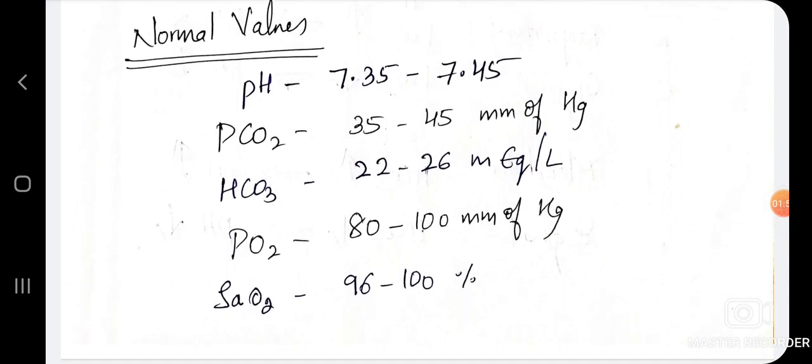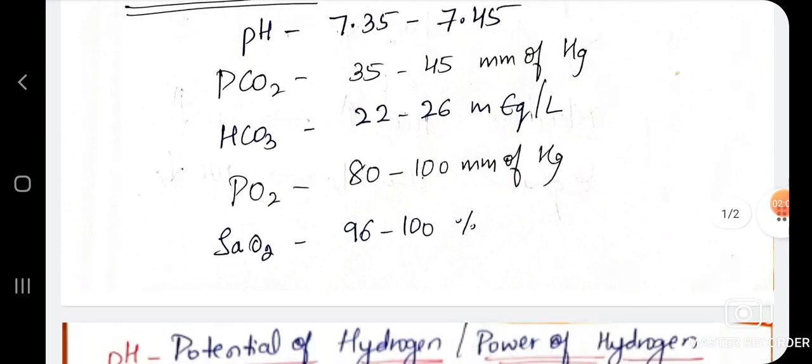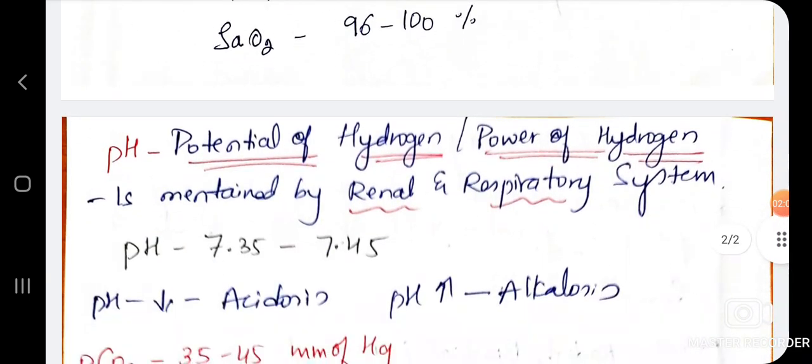Okay. Normal values. pH bandhru 7.35 in the 7.45. PCO2 35 to 45. HCO3 22 to 26. PO2 80 to 100. Then SAO2 96 to 100.